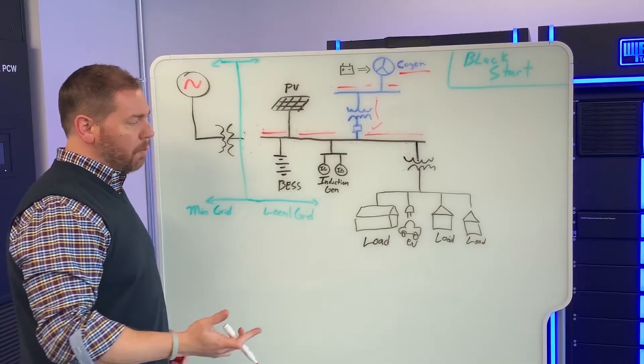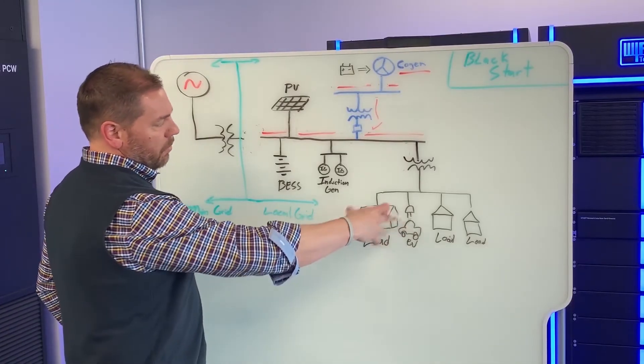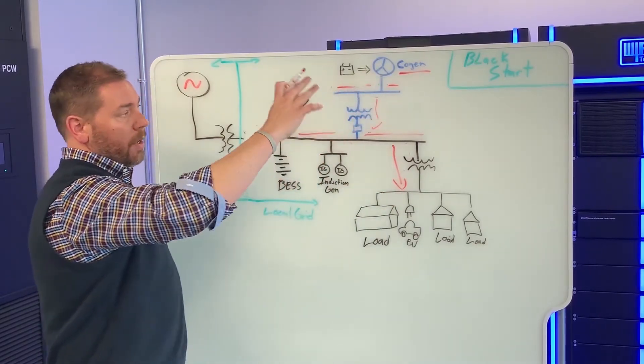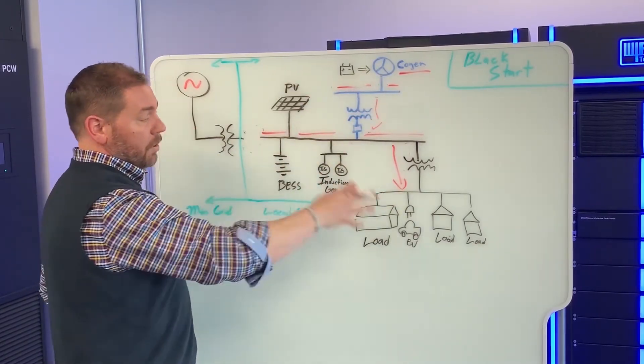So there's some type of control process with predetermined loads that turn on. We start turning on the loads and the Cogen controls the voltage and frequency while these loads are turning on.